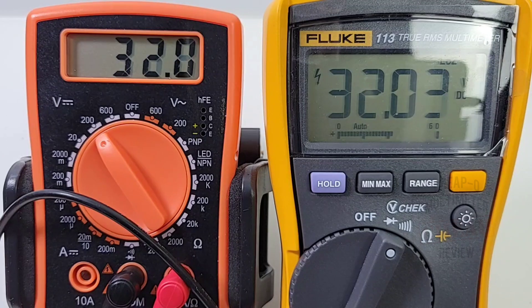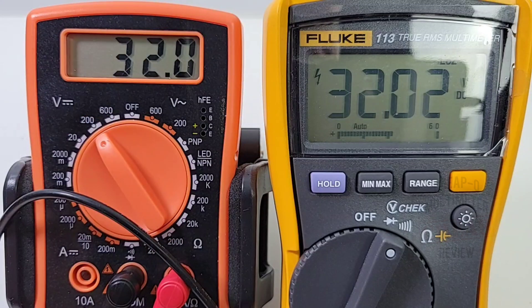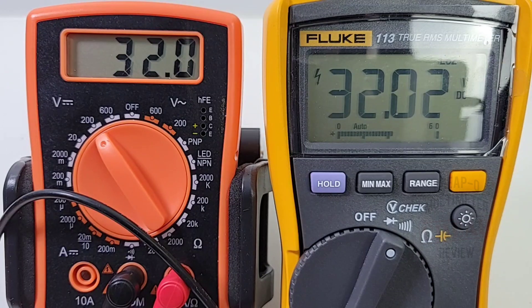So there you have it, a 200 dollar meter versus a five dollar meter. In terms of basic DC voltage, hey, pretty well neck and neck. Now you don't have that nice high voltage indicator like you do on the Fluke, no warning on the Rushoi, but it only cost five bucks, right?